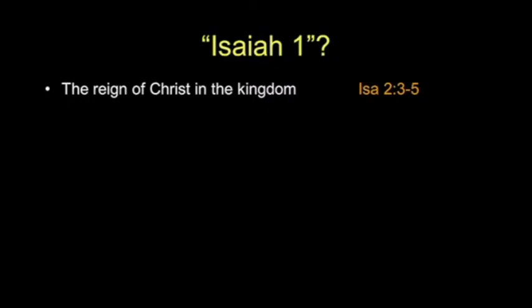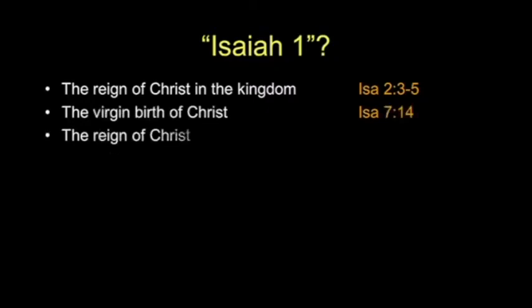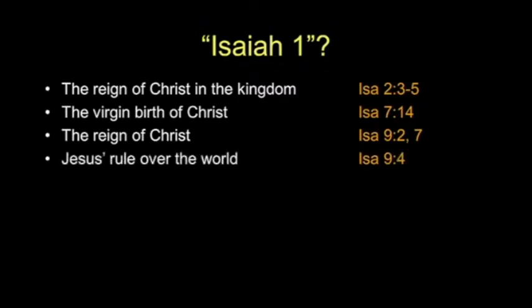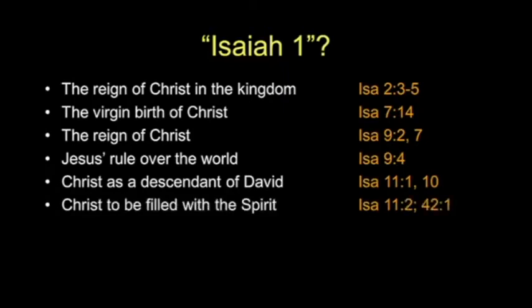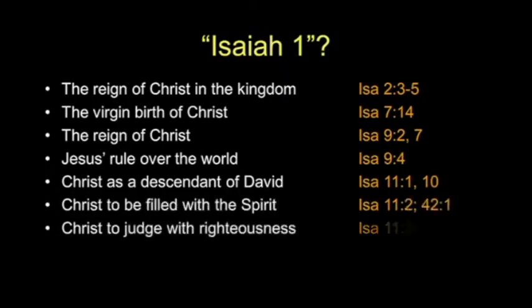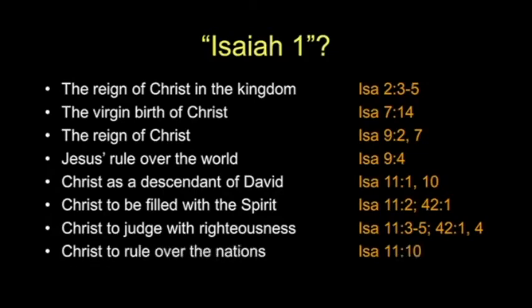Isaiah 1 talks about the virgin birth in chapter 7, the reign of Christ in chapter 9, Jesus ruling over the world in Isaiah 9, Christ as the descendant of David in chapter 11, Christ to be filled with the Spirit in chapter 11, Christ to judge with righteousness in chapter 11, and Christ to rule over the nations in chapter 11. How precious those passages are.